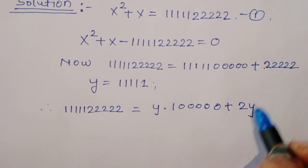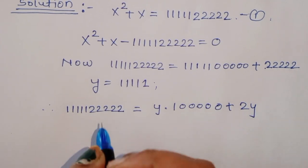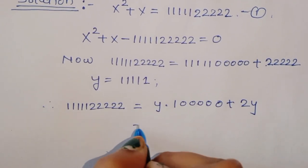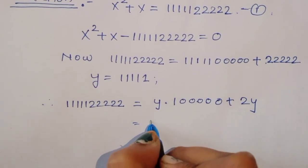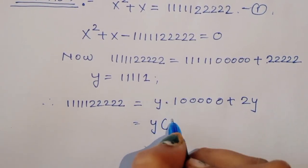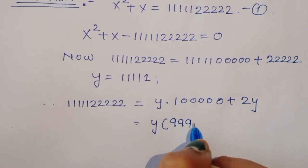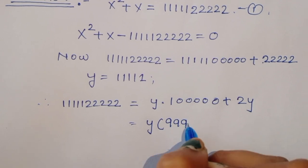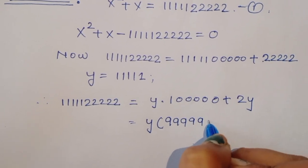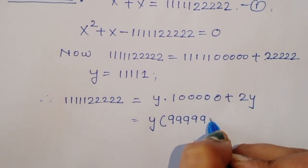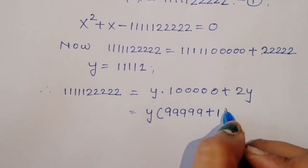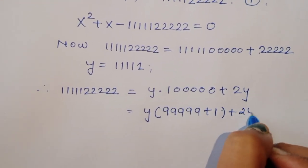Therefore, we can say 1111122222 is equal to y times 10000 plus 2y. This is 2y.